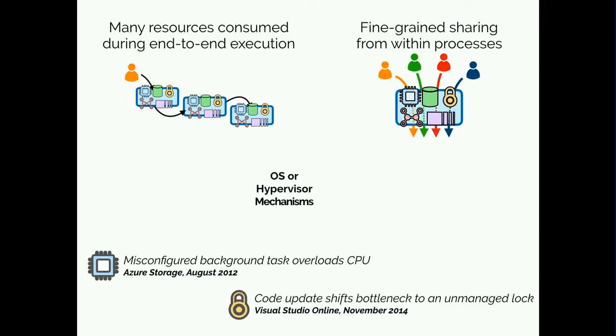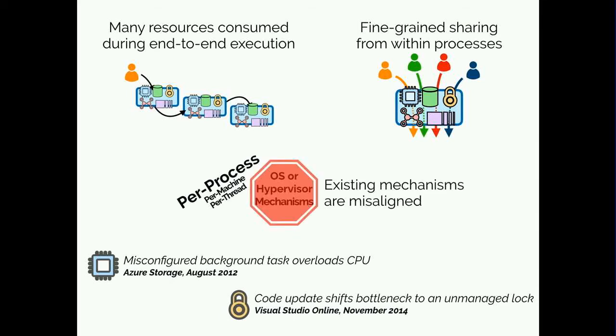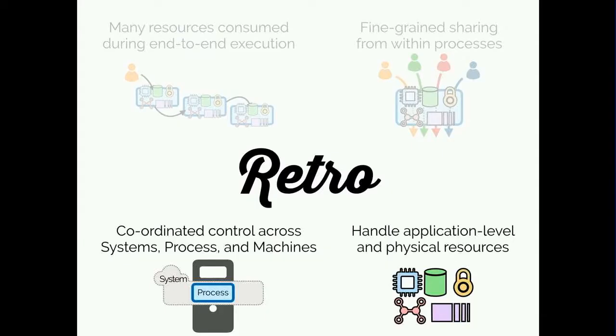This happens because traditionally, resource management is addressed at the operating system or hypervisor level. But this only aligns with the per-process, per-machine, or per-thread dimension, and cannot distinguish between tenants within processes. What we really need is the cross-cutting dimension. Retro aligns with the cross-cutting dimension — it coordinates resources across all system processes and handles both application-level and hardware resources.